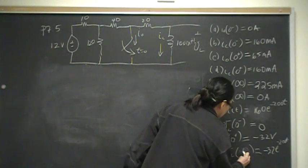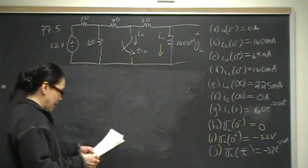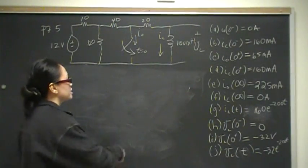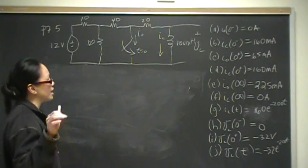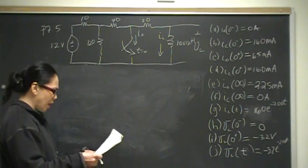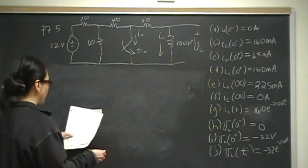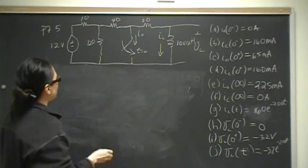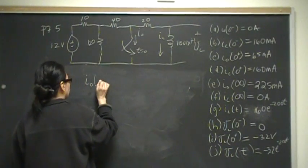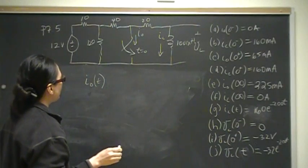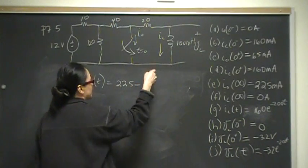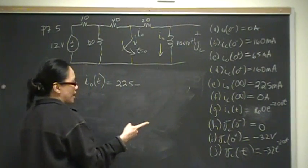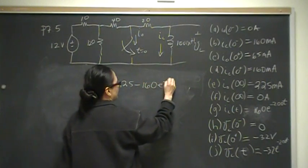Part J is the voltage drop across the inductor at time infinity. Since the current eventually decays to zero and the energy dissipates, the voltage drop at time infinity will be zero. Finally, the general equation for the current through the switch is its full value of 225 milliamps minus the inductor current, giving i_switch(t) = 225 − 160e^(−200t) milliamps.